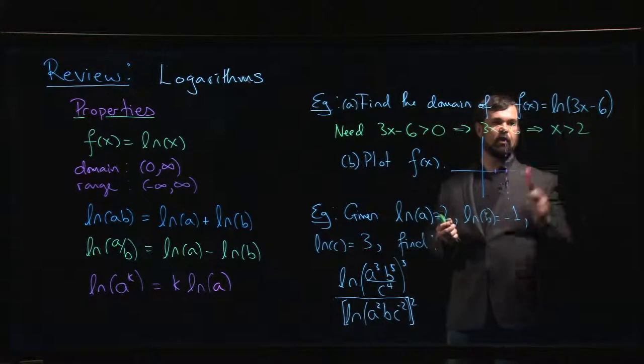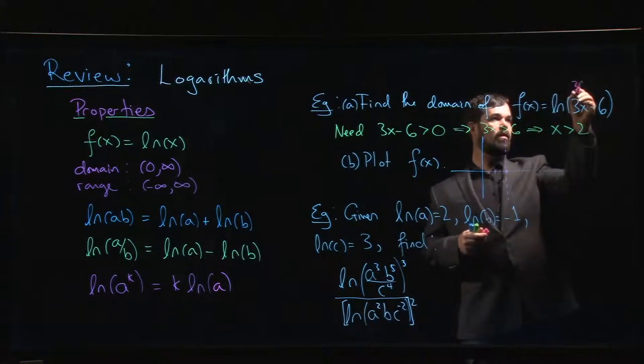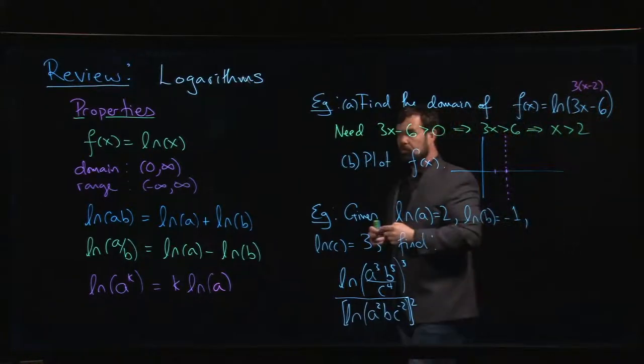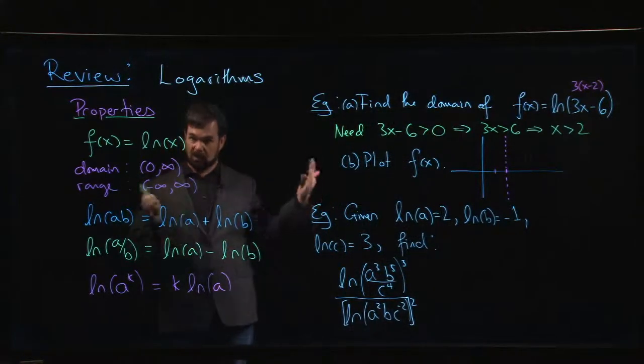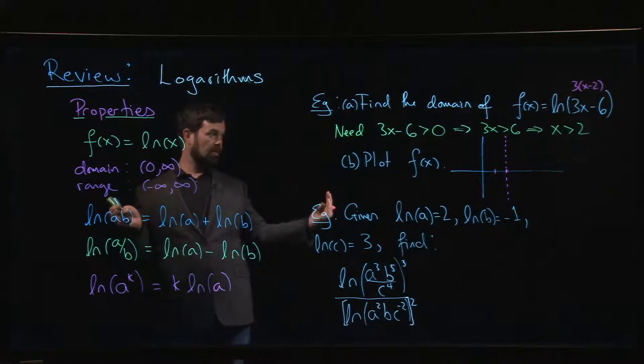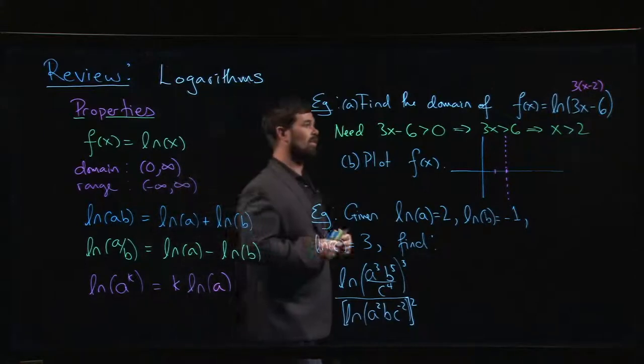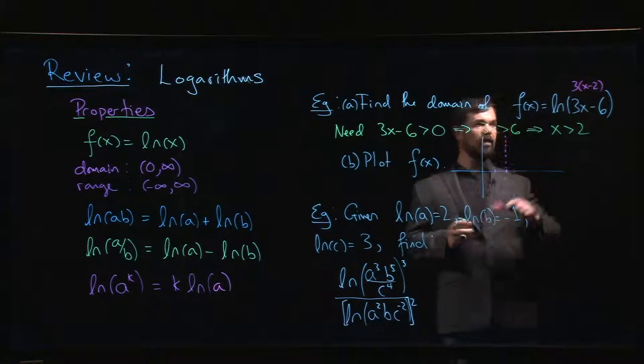If you think about it that way, what we've done is we've shifted to the right by two units, thinking of the transformations. We shifted to the right by two units, and then we've compressed horizontally by a factor of 3. All that's going to do is rather than having it go like that, it's going to be a little bit steeper.